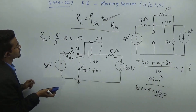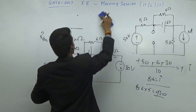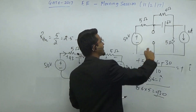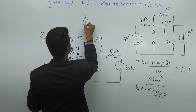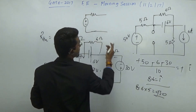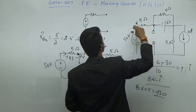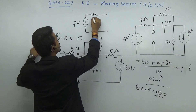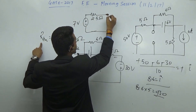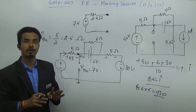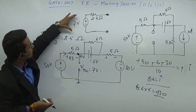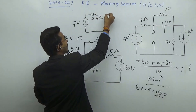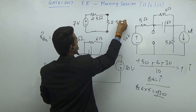Now I will redraw the circuit. With the Thevenin theorem, any bigger circuit can be replaced with one voltage source in series with one resistance across these terminals. The value of VTH is 7 volts and RTH is 2.5 ohm. From the maximum power transfer theorem, to transfer maximum power from the 7 volt source to the load, the value of RL should be equal to RTH, that means 2.5 ohm.